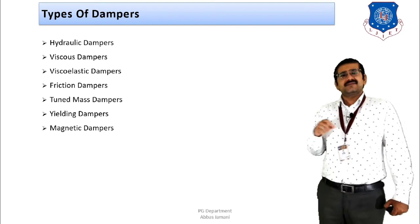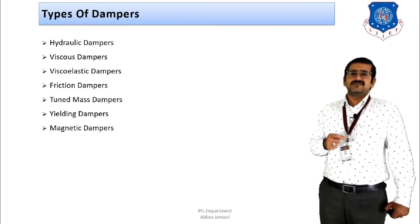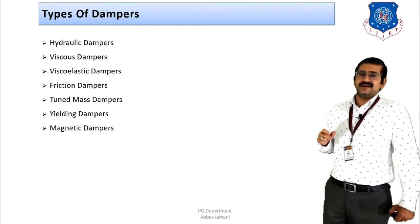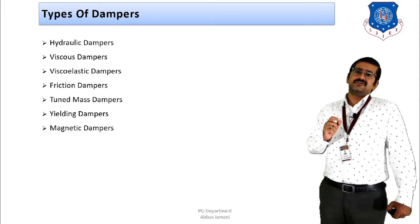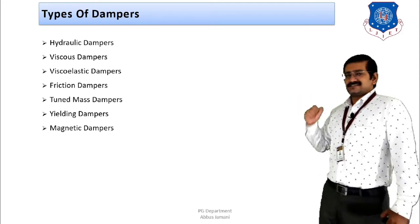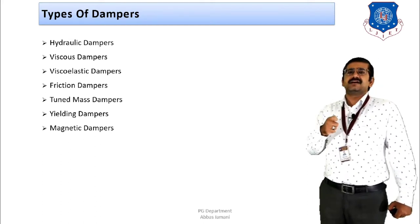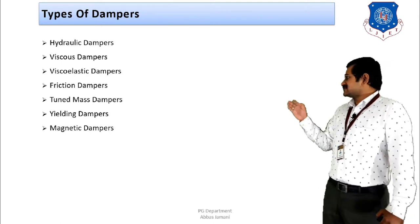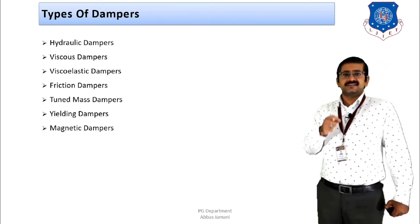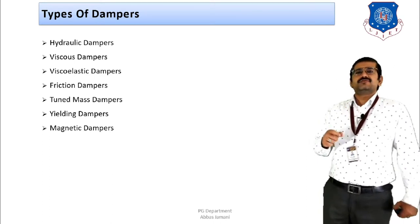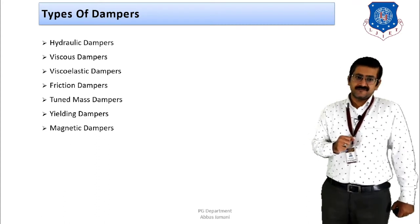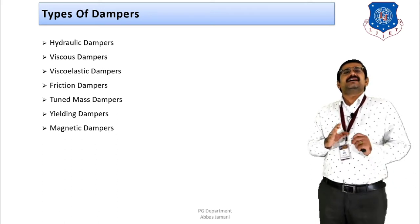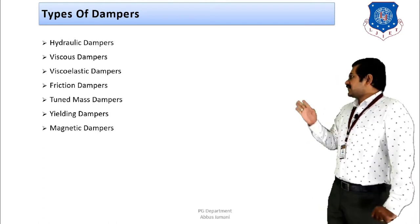By the name itself you can identify the characteristic material of each damper. The hydraulic damper uses a fluid as its characteristic material to dampen seismic energy. The viscous damper uses a viscous material such as silicon to dampen the transferred force. The viscoelastic damper uses elastomers or rubber pads to absorb energy from seismic ground shaking. The friction damper uses steel plates, dissipating energy through friction between the sliding plates.